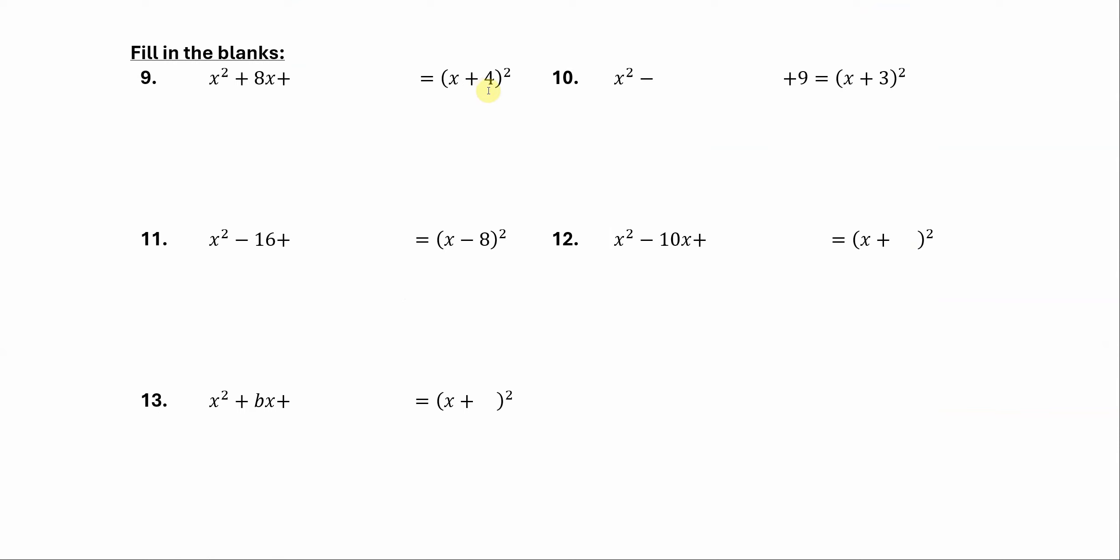So if we were to do x plus 4 quantity squared, what would go in here? Well, we can do a little bit of the problem. X plus 4 times x plus 4. So this is going to factor into x squared plus 8x plus 4 times 4, which is 16. So that's the number that goes in there.